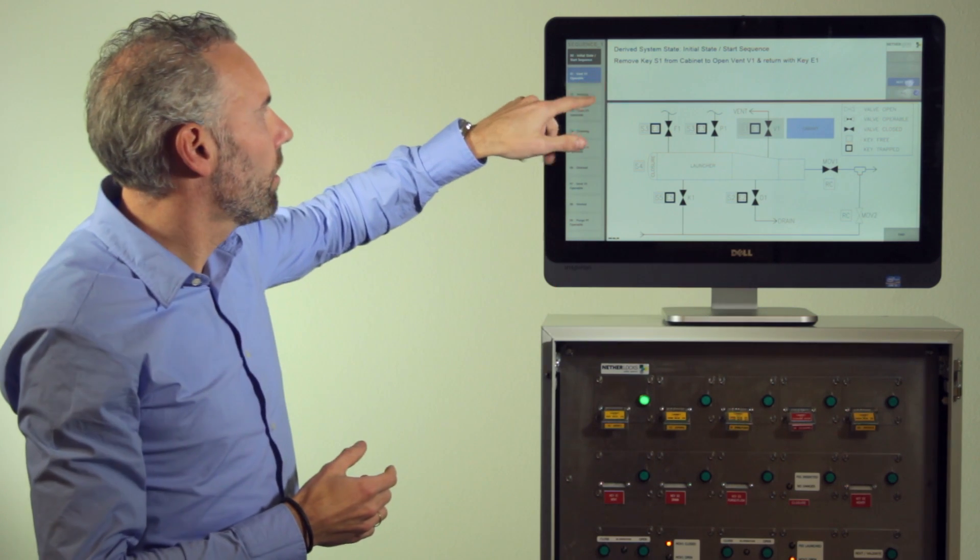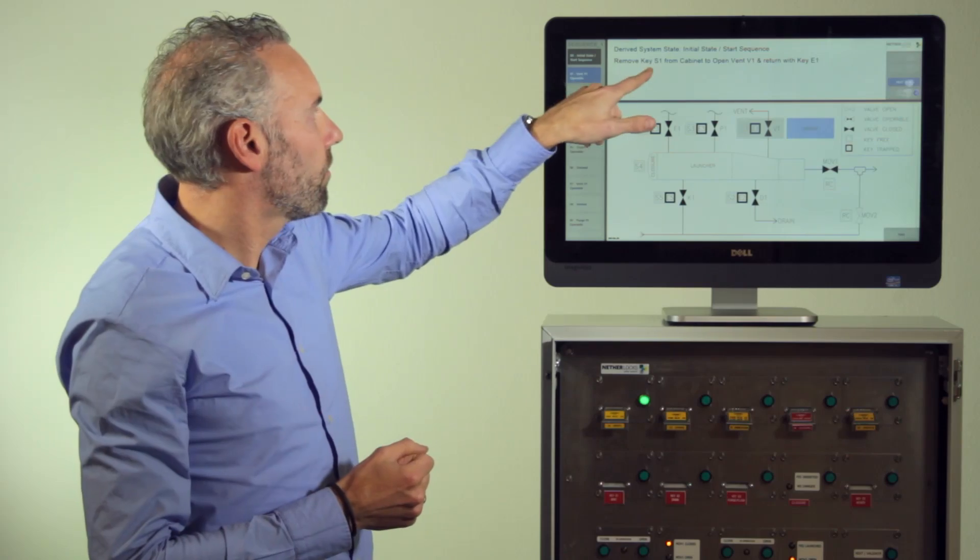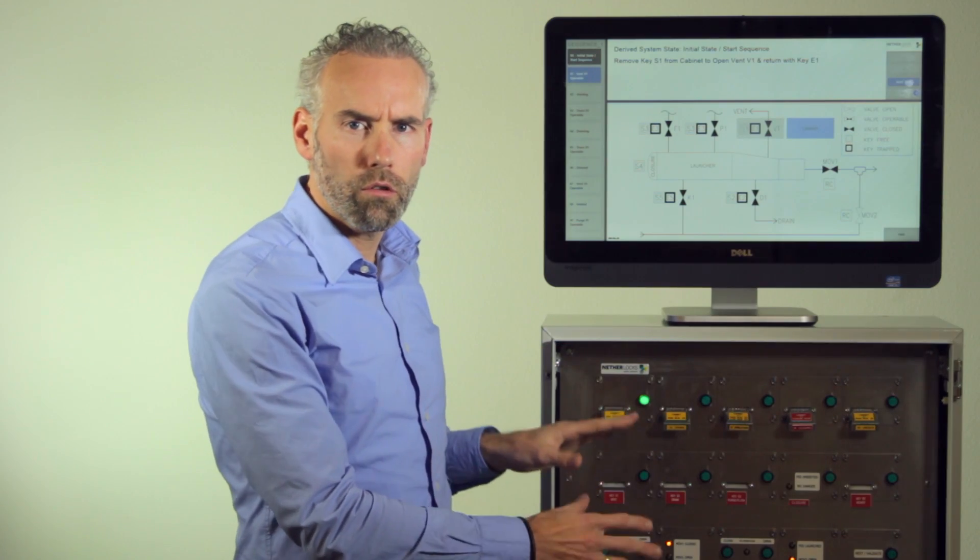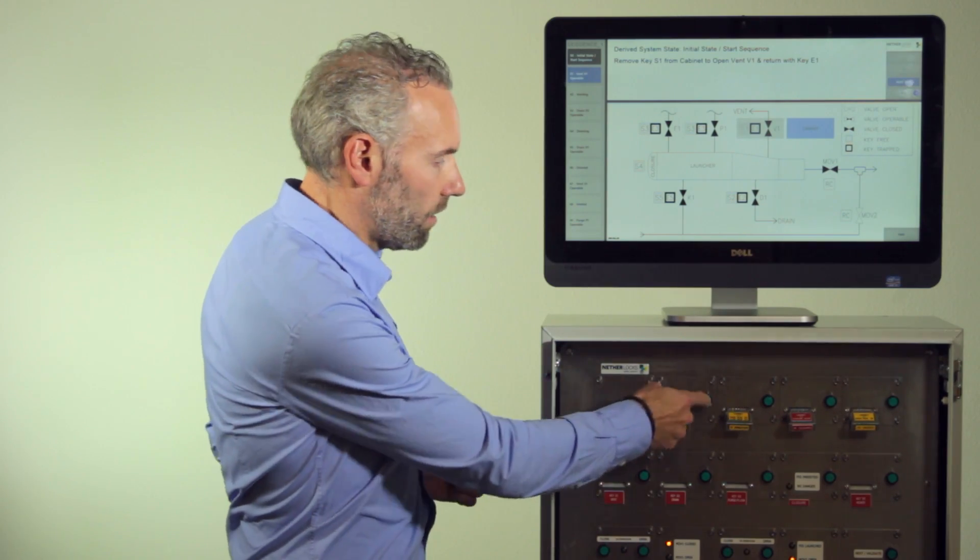At this moment the system is in the initial state, it's the starting sequence and the first step the operator has to do is take key one from the cabinet. At the same time the cabinet also communicates to the operator via these LED lights.